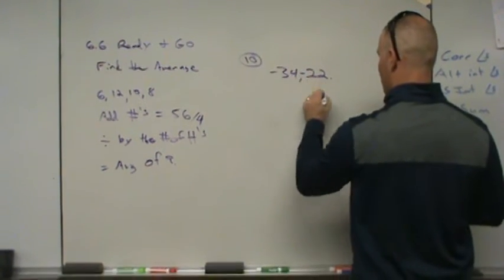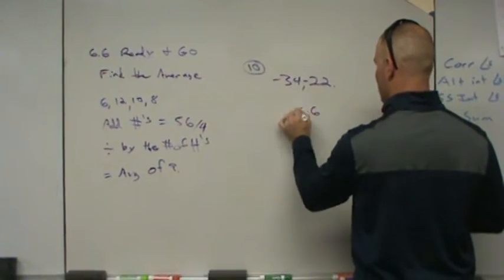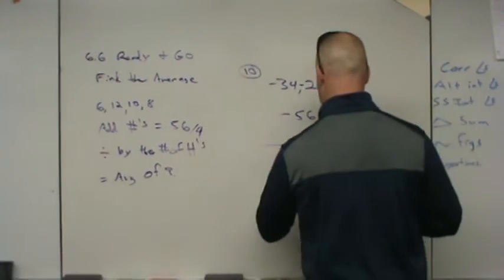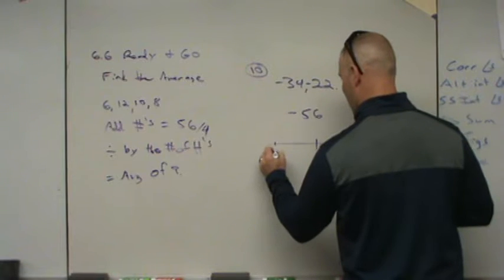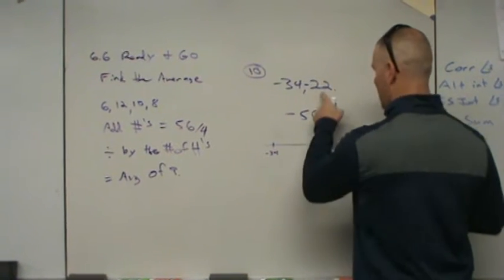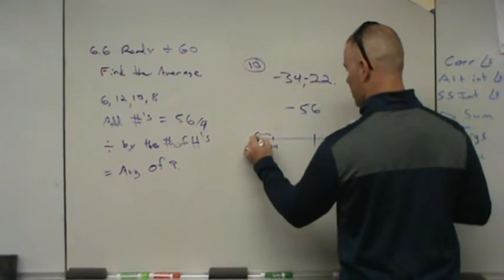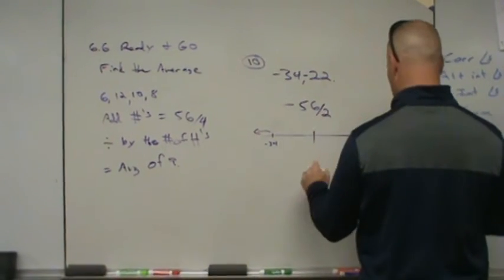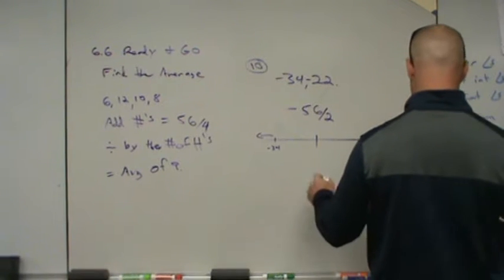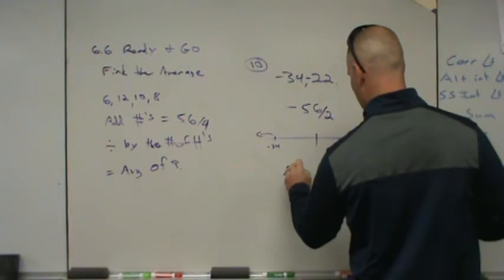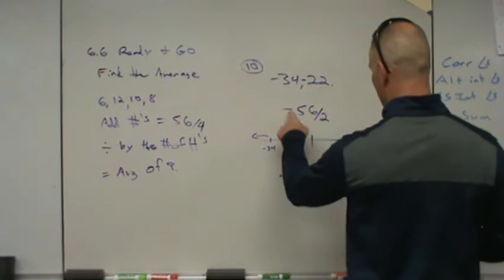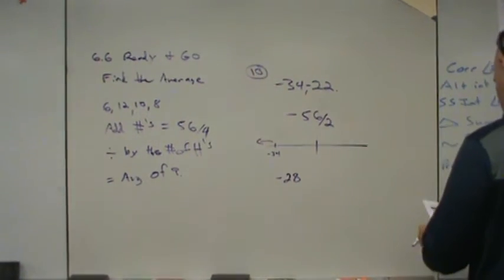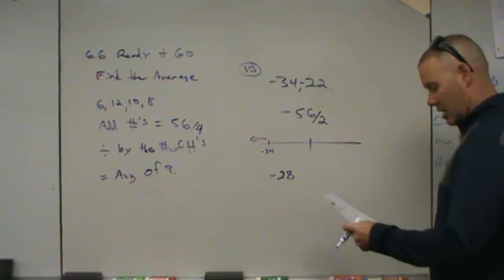These are both negative, so 34 plus 22 is 56 — this is negative 56. Think about it numerically: starting at negative 34 and subtracting 22 more, you continue going further left. Then we divide by 2. 56 divided by 2 is 28, but it's a negative divided by a positive, so your average is negative 28.